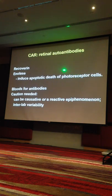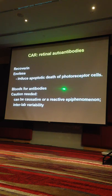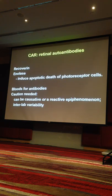We know that there are antiretinal antibodies — recoverin and enolase. Recoverin is global; enolase tends to go to the cones, and they induce apoptosis. You need to be cautious: even if you get antiretinal antibody tests as positive, there is an association, but you don't know whether they're causative or whether it's a reactive epiphenomenon to what's going on in the retina. So you need to treat that investigation with caution.